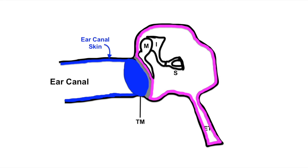In this particular patient's case, the ear canal skin is completely covering the outer squamous layer, resulting in stenosis and conductive hearing loss, as the TM is not able to vibrate normally.